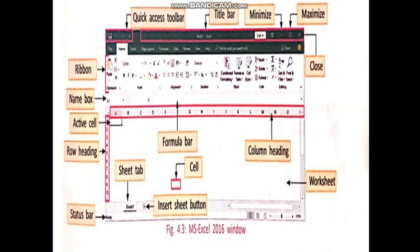Next one, status bar. At the bottom, you see the status bar is there. It is located at the bottom of the Excel window. It displays the current status of the cells, and the zoom option is also there in the status bar.